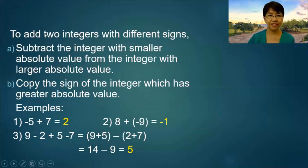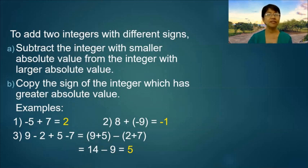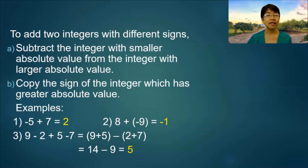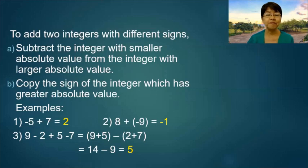To add two integers with different signs, subtract the integer with the smaller absolute value from the integer and copy the sign of the integer which has the greater absolute value. Examples: negative 5 plus 7 is equal to positive 2. Number 2: 8 plus negative 9 is equal to negative 1. Number 3: 9 minus 2 plus 5 minus 7. You group together the positive numbers and then add the negative numbers and attach the negative sign. So 14 minus 9 is equal to negative 5.